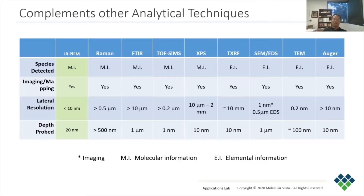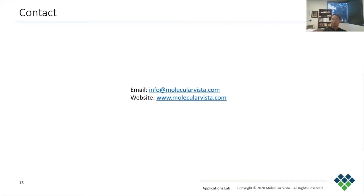This table summarizes the current landscape of common analytical techniques. While elemental information can be acquired with atomic resolution using electron microscopes, we can see the glaring gap in current molecular analysis below a spatial resolution of about 200 nm. Given PIFM's spatial resolution of sub-10 nm and monolayer sensitivity, PIFM fills that gap very nicely. Thank you for your attention.